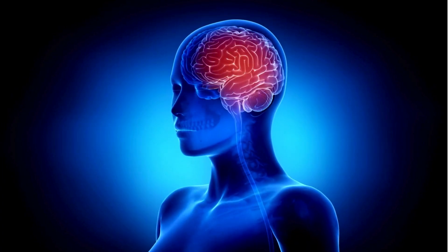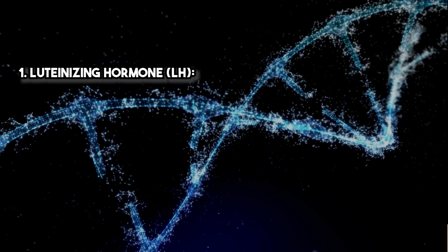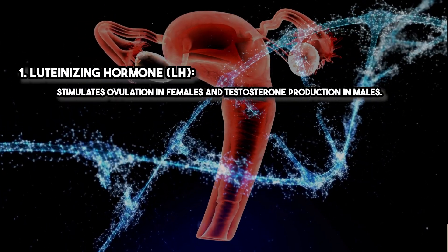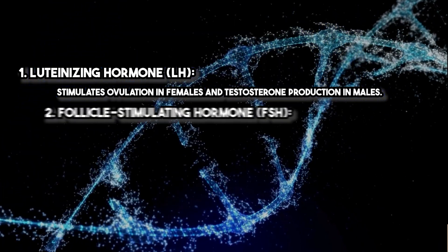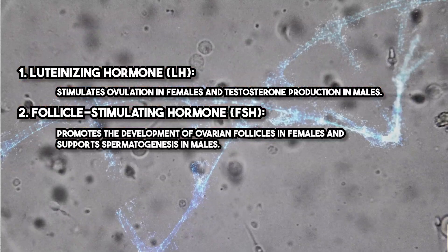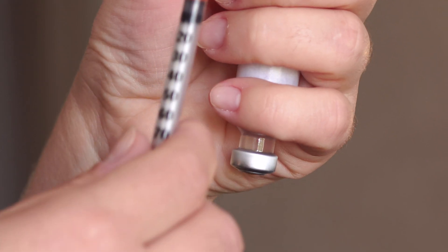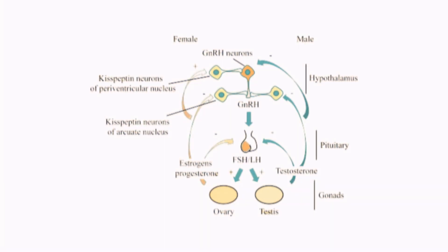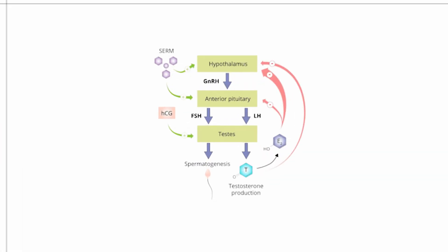Gonadurilin acts on the pituitary gland to stimulate the release of luteinizing hormone and follicle-stimulating hormone. LH stimulates ovulation in females and testosterone production in males. FSH promotes the development of ovarian follicles in females and supports spermatogenesis in males. When administered as a single bolus dose, gonadurilin causes a transient surge in LH and FSH. In contrast, continuous administration can suppress LH and FSH secretion due to down-regulation of GnRH receptors in the pituitary gland. This dual mechanism allows gonadurilin to be used in both therapeutic and diagnostic settings, depending on the treatment goals.